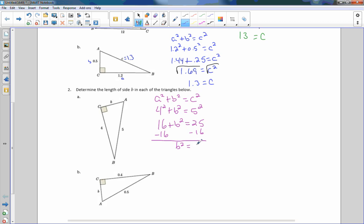16 minus 16 is 0, plus B squared is just B squared, and 25 minus 16 is 9. I'm going to take the square root of both sides, and the square root of B squared is B, and the square root of 9 is 3. So side AC or B, side B is 3.